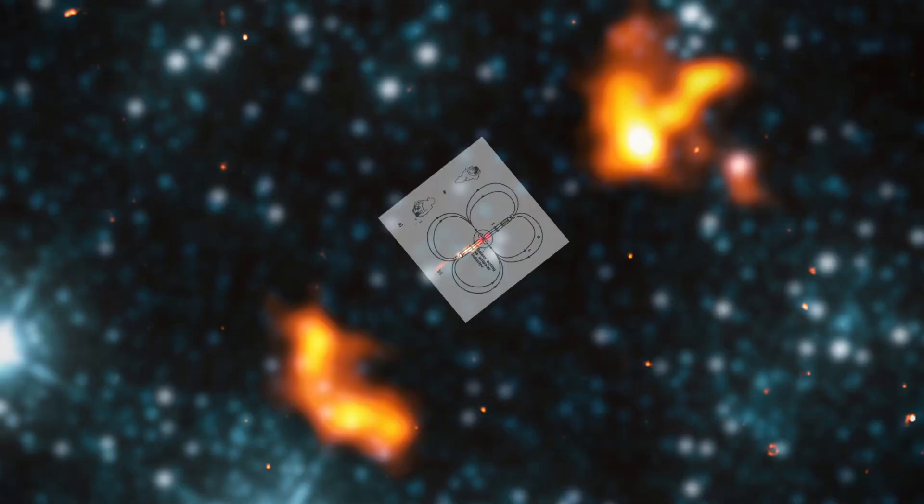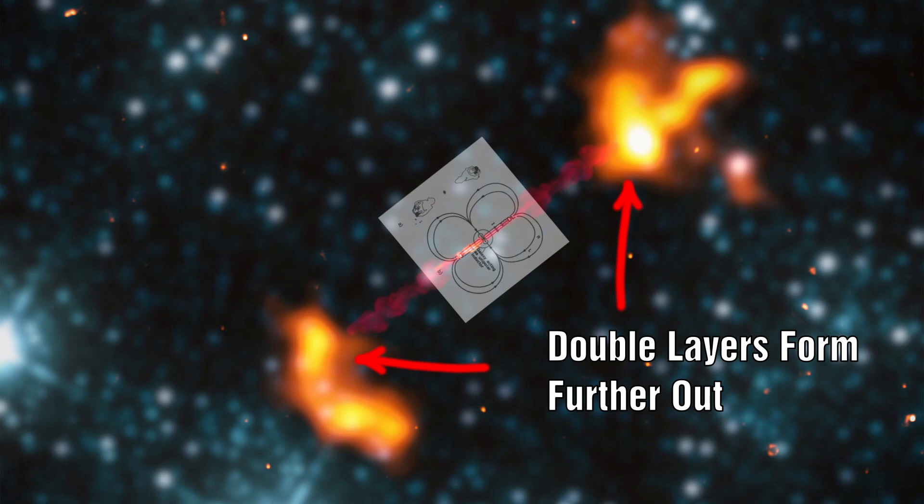Is it possible that in this case the ejected material remained in a coherent, evenly distributed stream for a much longer distance compared to other galaxies? Could the lower density space have helped here? Could they have formed further out and the lower density also allowed the electron cloud to grow larger as well?